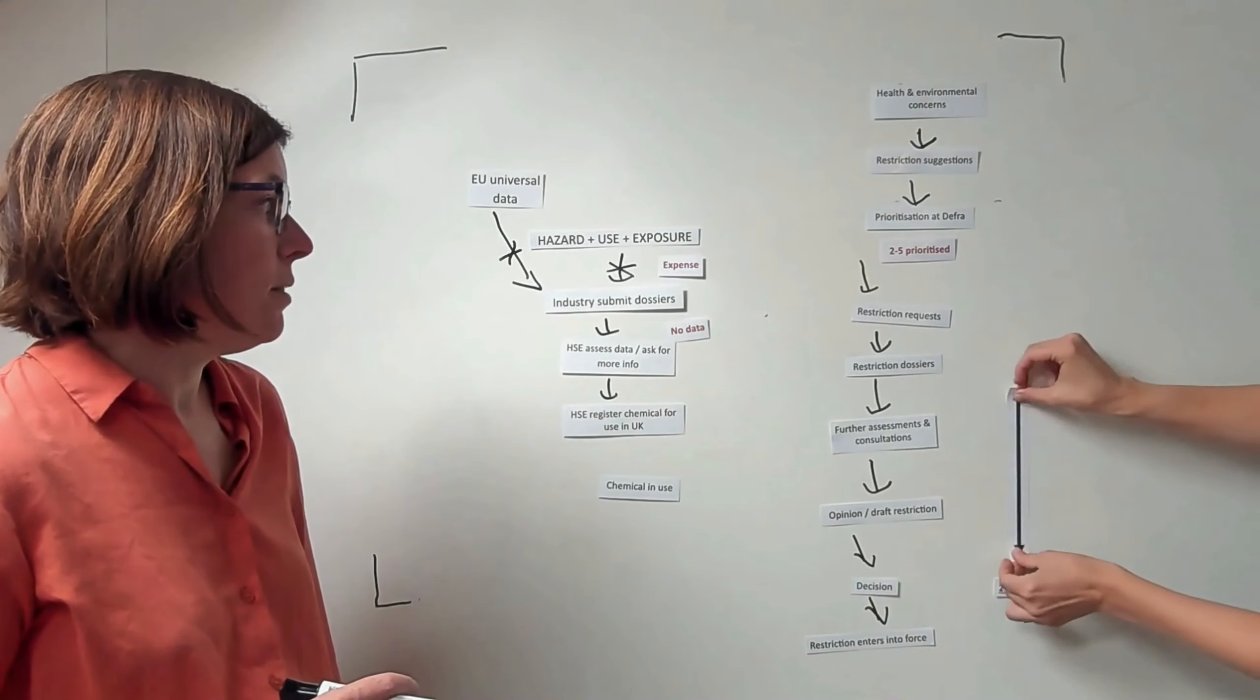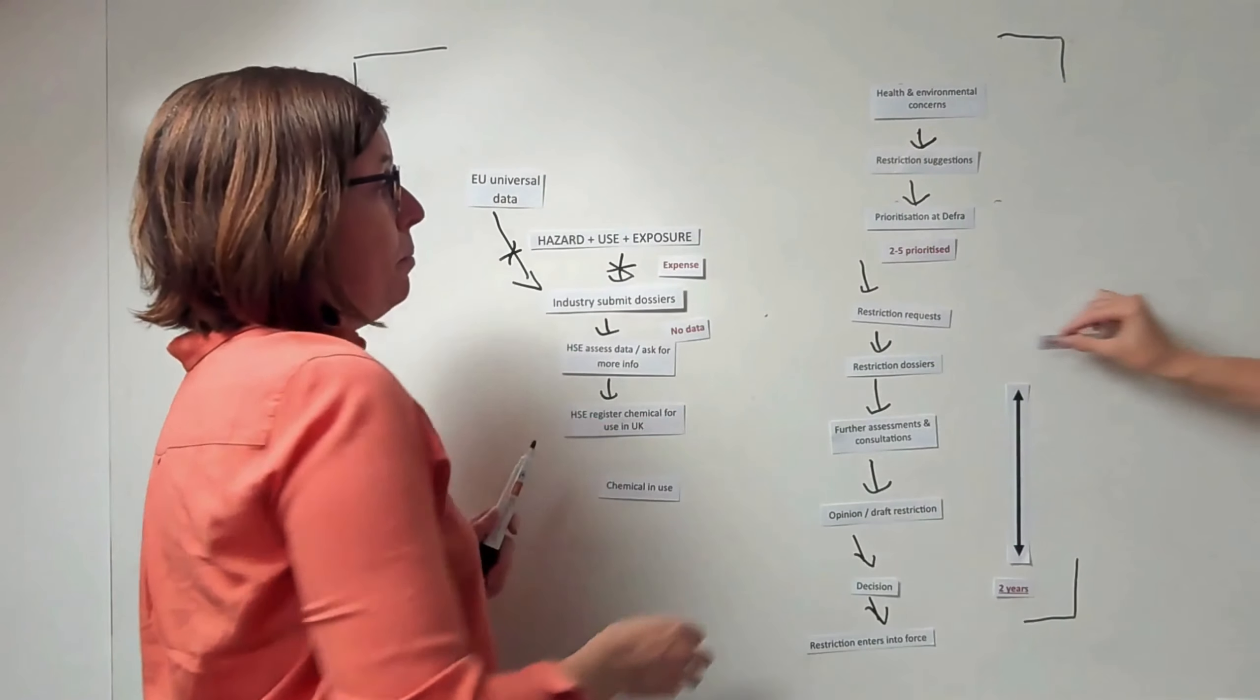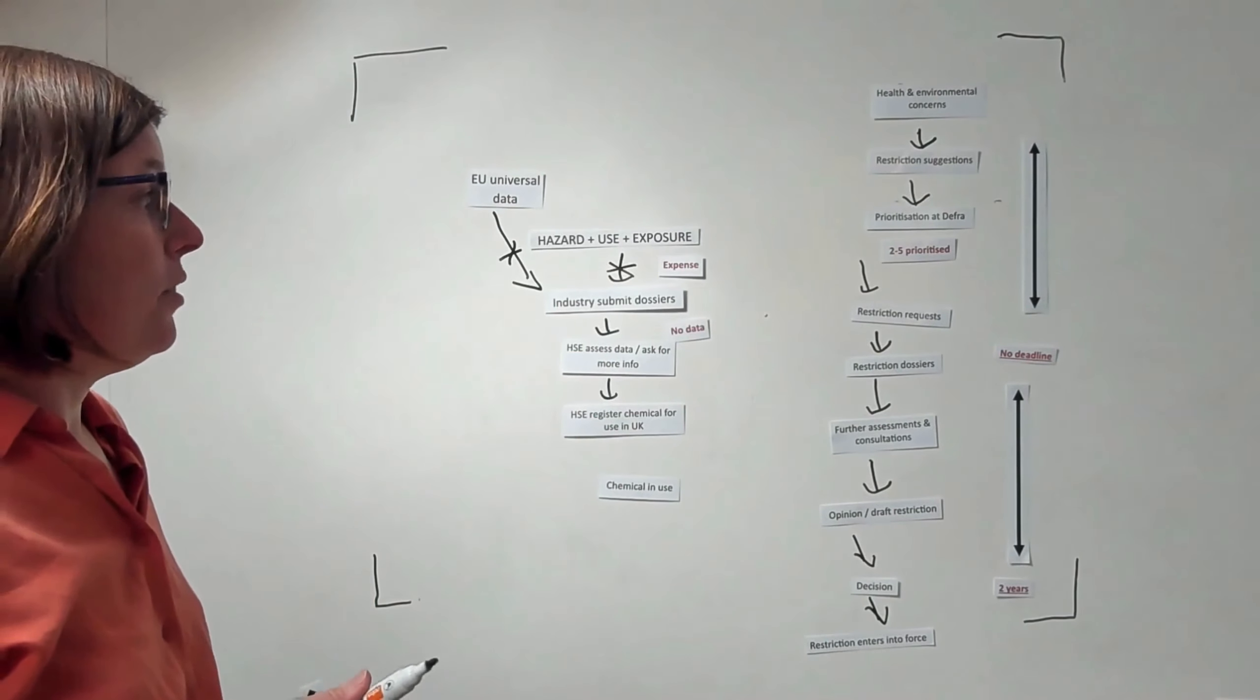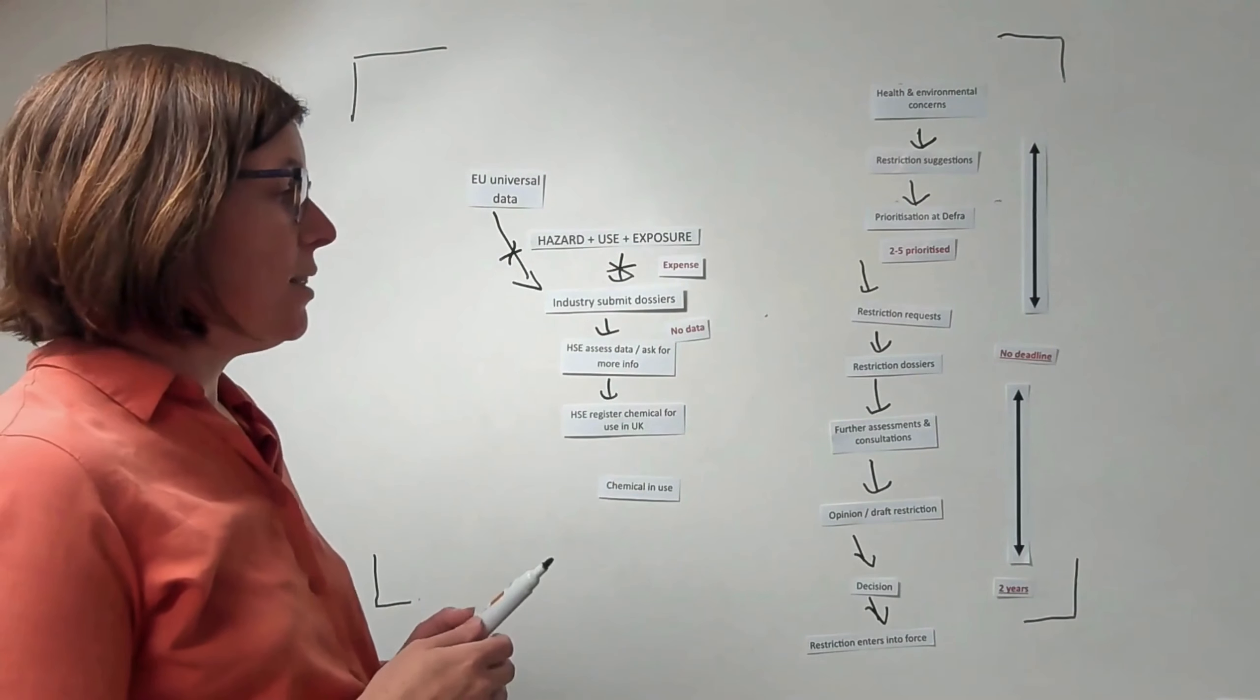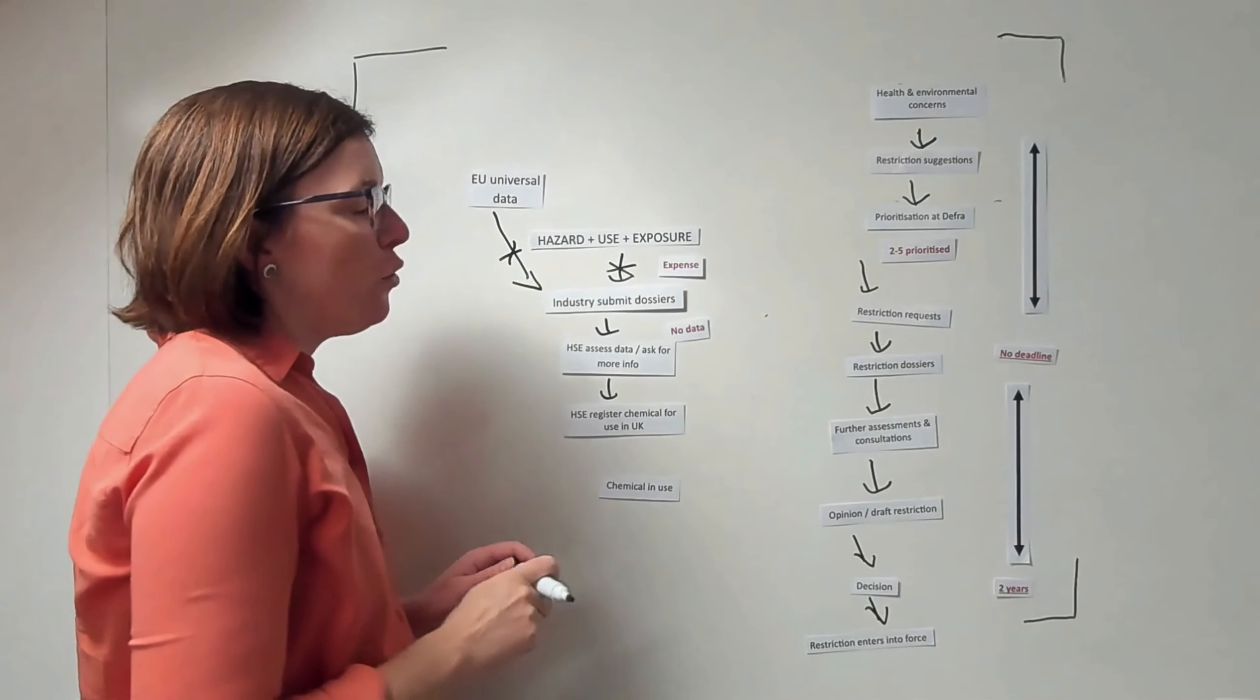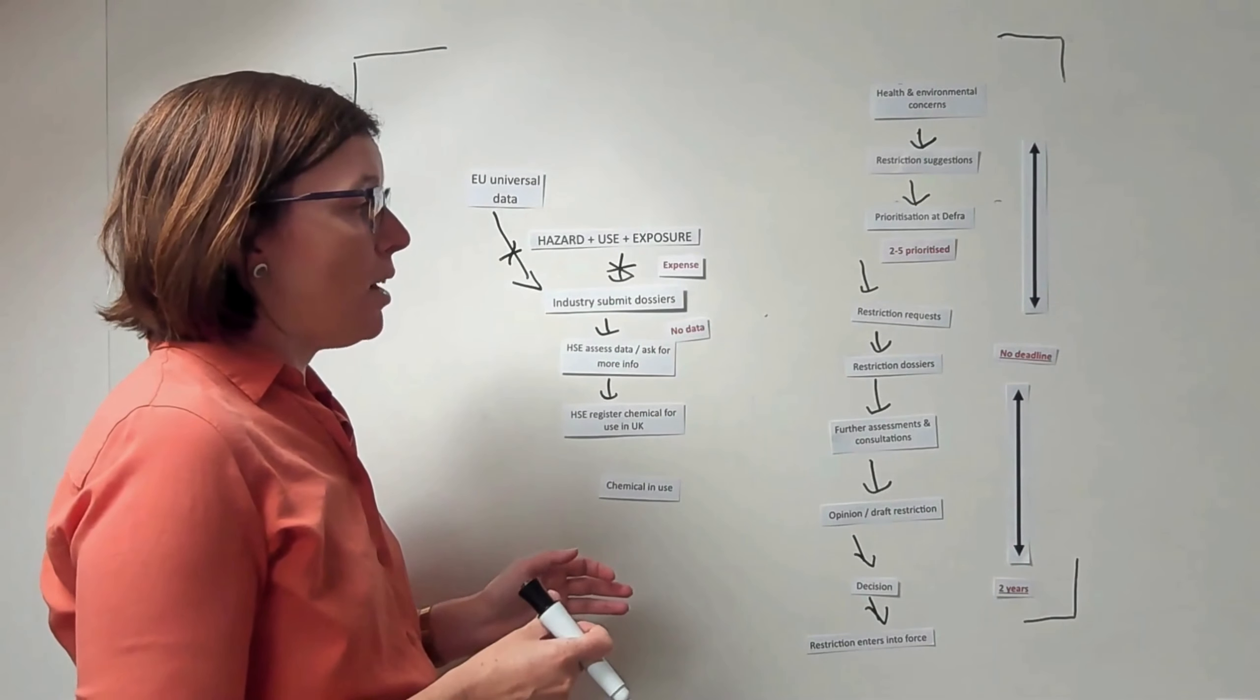One of the issues we have is that the first start of the process has no deadline, and this can take as long as it takes really. At the moment it's taking a very long time. That's because extra steps have been added in. For example, a restriction request was made for PFAS.